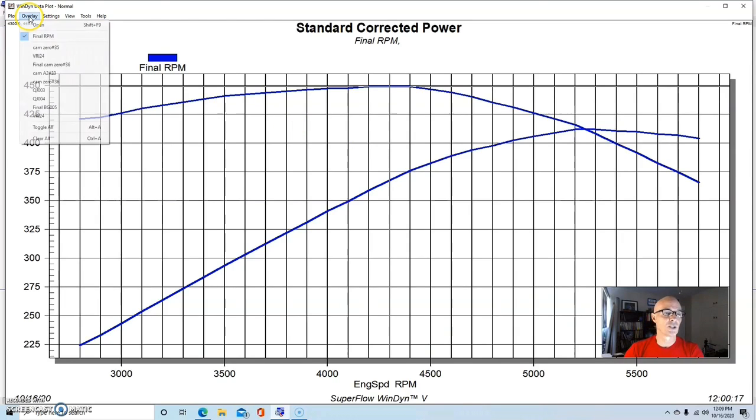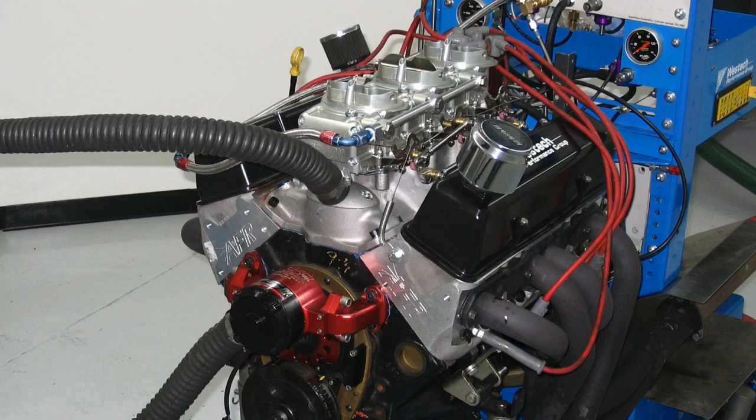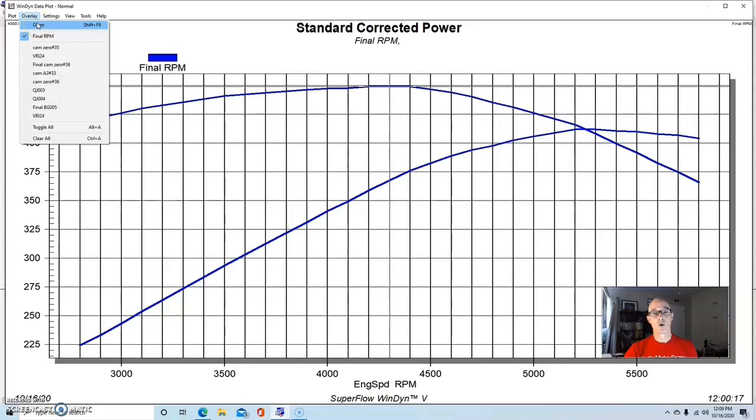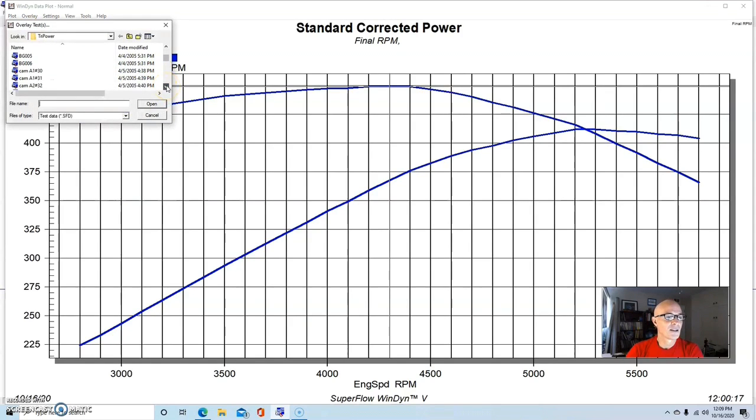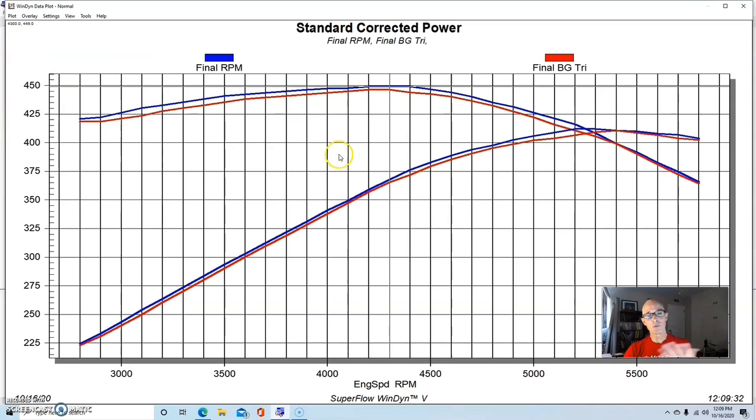I want to point out the fact that it made more torque than horsepower tells you how mild this combination actually was. But here's what happened when we installed the Barry Grant tri-power setup. So what do you guys think? Is it going to make more power than the four-barrel? Is it going to make less power and be terrible? What's going to happen here? Let me know in the comments. I'll give you five seconds. Five, four, three, two. Did you guys get all your comments in?